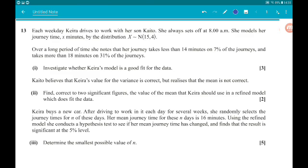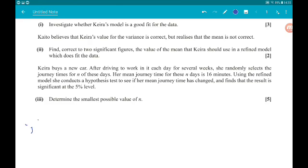Part 1 for 3 marks wants us to investigate whether Kira's model is a good fit for this data. So if the model is a good fit, then the probabilities that her time is less than 14 minutes and greater than 18 minutes will be similar to these percentages that she's noticed. So we're going to work out these probabilities. Part 1. The probability x is less than 14.